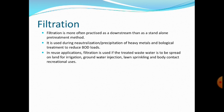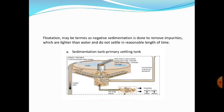Next is flotation, which may be termed as negative sedimentation. It is done to remove impurities which are lighter than water and do not settle in a reasonable length of time. Like coagulants in sedimentation, flotation may be done with or without the aid of flotation agents. Industries employing flotation include woolen mills, slaughterhouses, pulp and paper mills, oil refineries, and dairies. Both sedimentation and flotation help reduce the solid load on downstream treatment units.